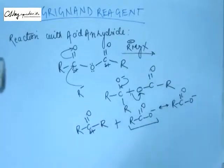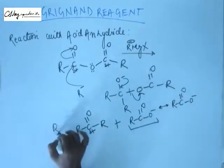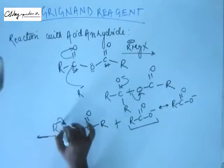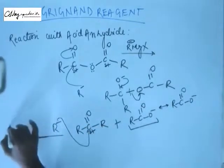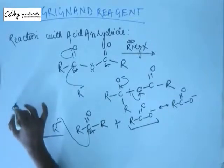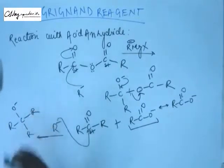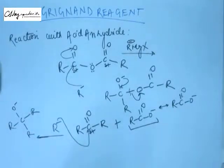This will further participate in reaction as we had in case of acyl chloride and ester. So further this is going to react with one equivalent of Grignard reagent. The Grignard reagent is again going to attack this carbonyl carbon, forming again a tertiary alkoxide ion, and when we give H+, this gets neutralized and we get a tertiary alcohol.